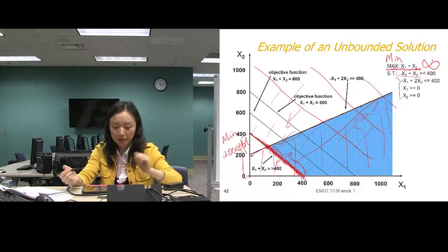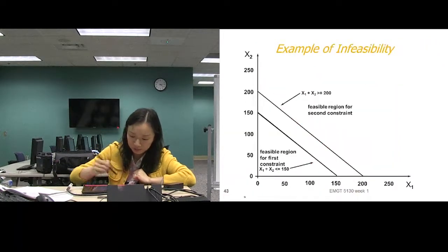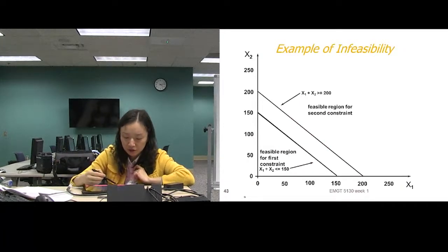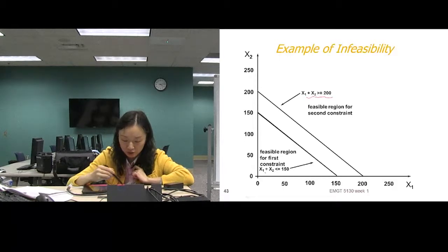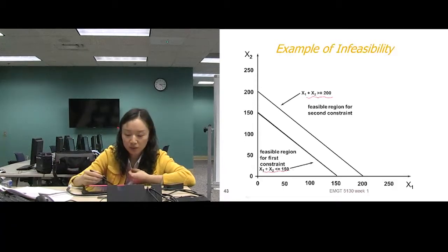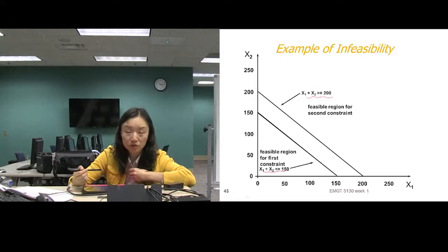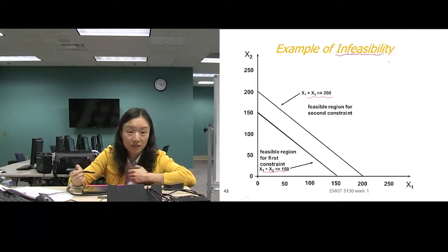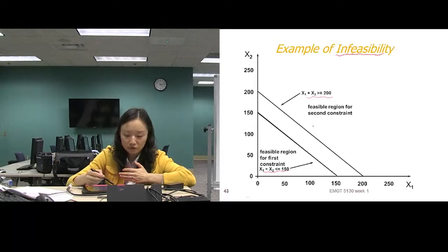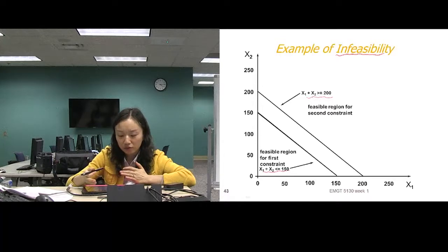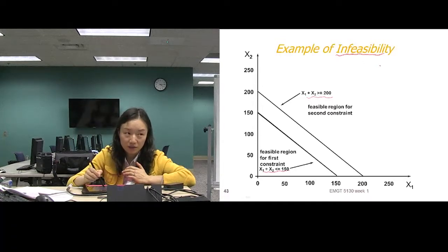Another special situation is infeasibility. For example, if one constraint requires X1 plus X2 greater than or equal to 200 while another requires less than or equal to 150, those two constraints cannot be simultaneously satisfied — there is no feasible solution. Sometimes this is easy to spot just by looking at the constraints; other times you need to plot them to see the infeasibility.